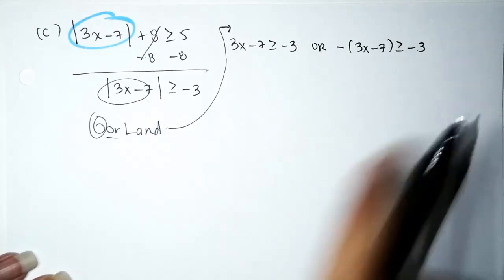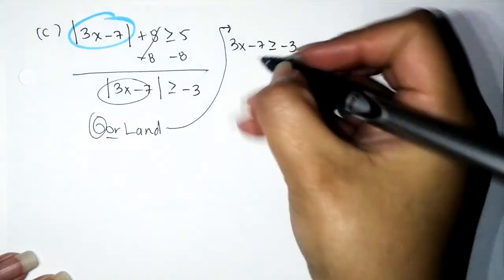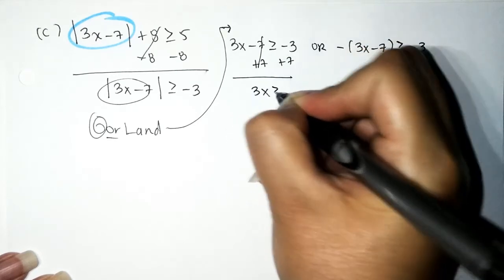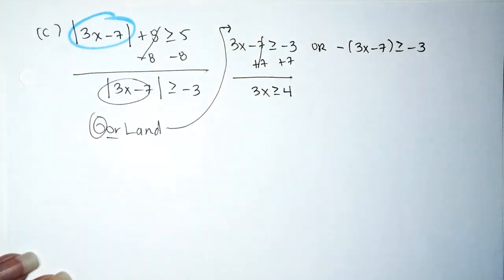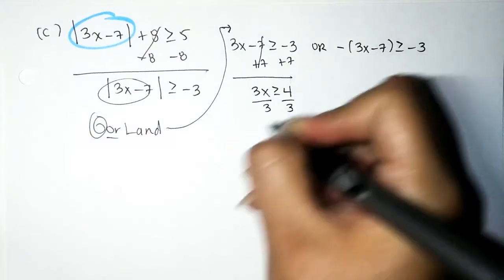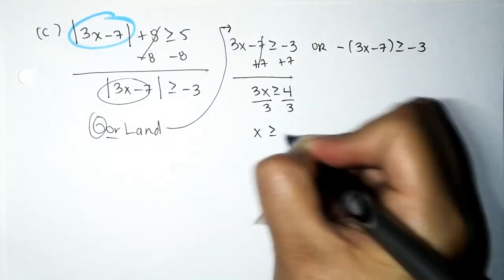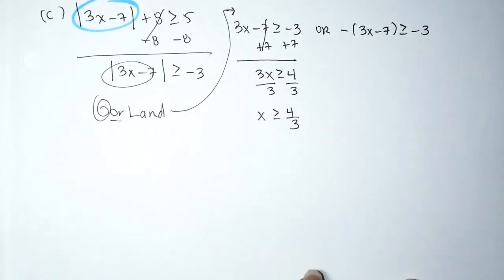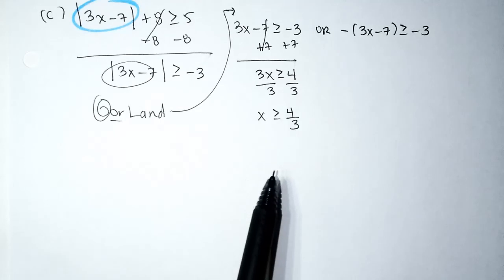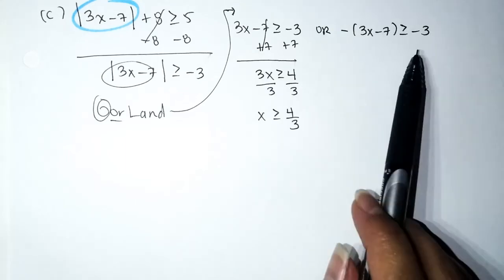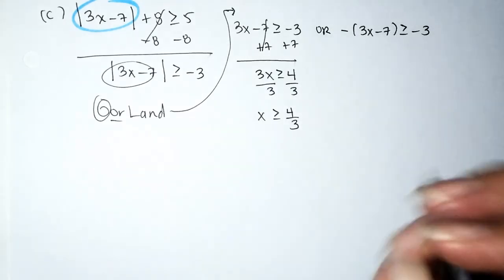First inequality: add 7 to both sides to get 3x ≥ 4. Divide by 3: x ≥ 4/3. Note that 4/3 as a decimal is a repeating decimal, so you would need an overbar.